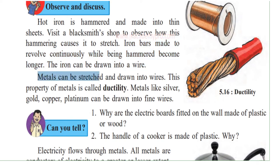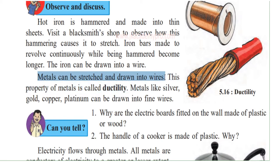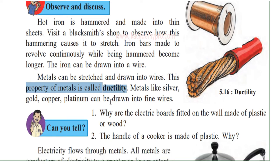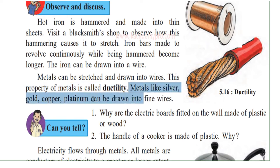Metals can be stretched and drawn into wires. This property of metals is called ductility — when you can make metal into wires, it is called ductility. Metals like silver, gold, copper, and platinum can be drawn into fine wires. All metals can be made into thin wires.